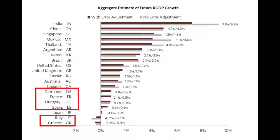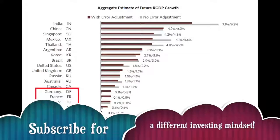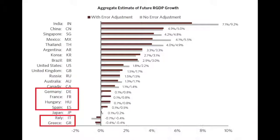Europe is at 0% to 0.8% max. You see Germany, France, Hungary, Spain, Italy and Greece, which are the countries they have taken into account. Compare Europe to the rest of the world and you can really see that Europe is the bag holder of the world, and there is nothing we can do to avoid this.